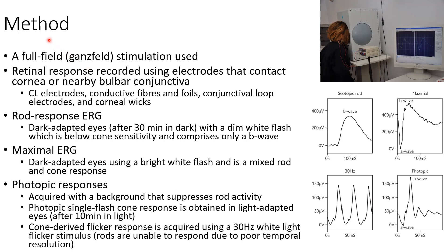Now let us discuss the method of full-field ERG. A full-field, that is Ganzfeld, stimulation is used, as you can see in this picture. The retinal response is recorded using electrodes that contact the cornea or nearby bulbar conjunctiva. We can use contact lens electrodes, conductive fibers and foils, conjunctival loop electrodes, and corneal wicks.